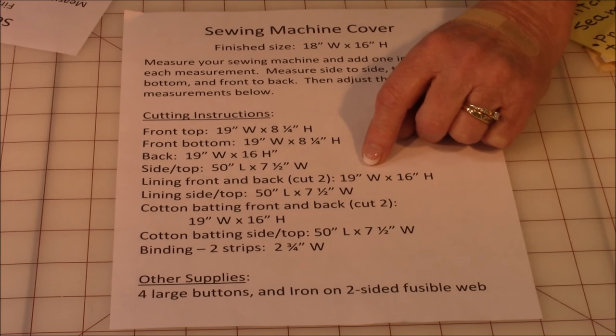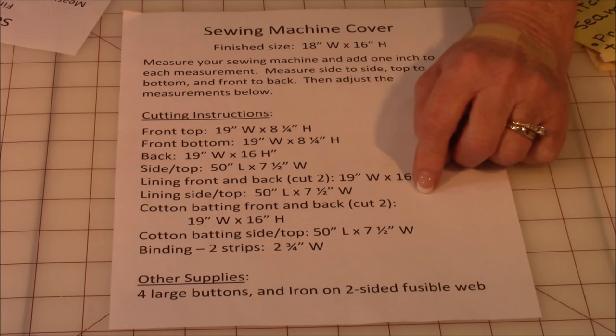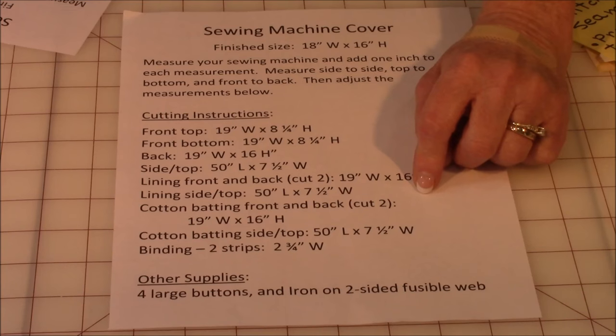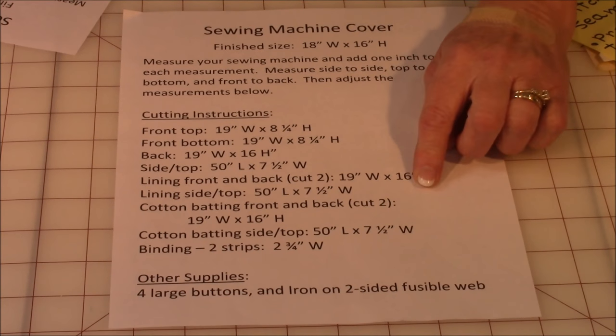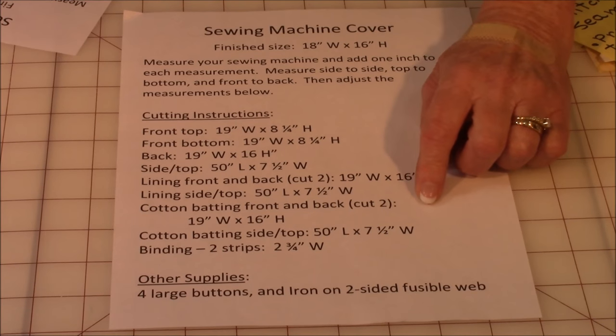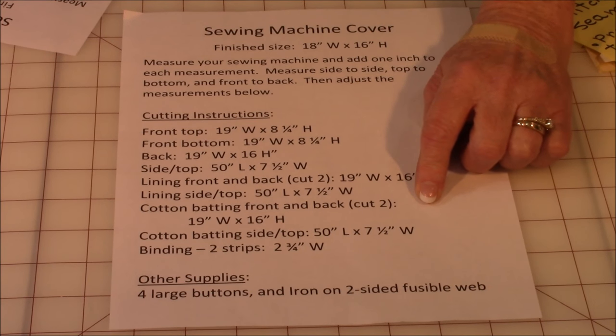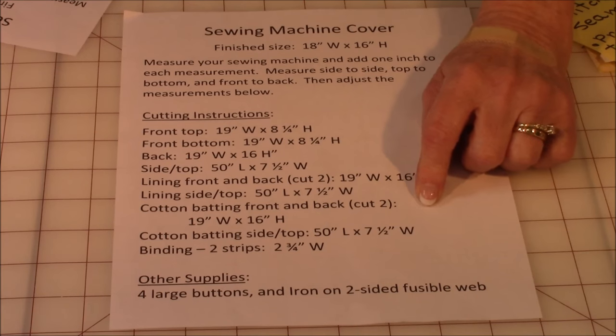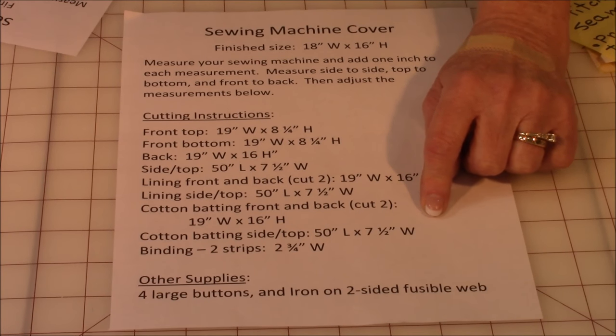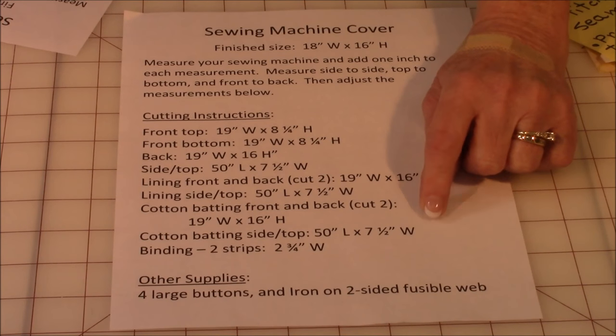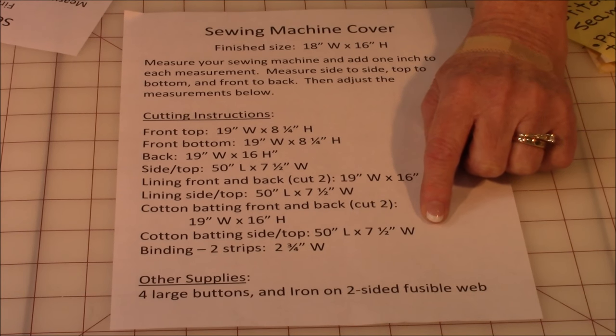Then for your lining for the front and the back, they're cut the same size. So cut two, 19 by 16. Then the lining for the top side piece 50 by 7 and a half. Cotton batting for the front back is 19 by 16. Cotton batting for the side top 50 by 7 and a half.